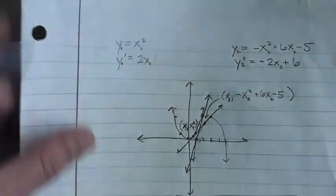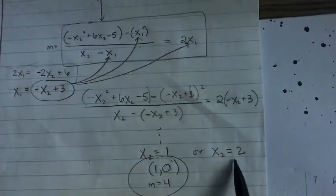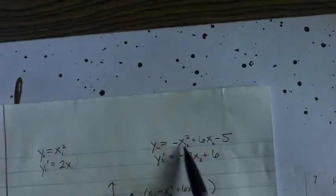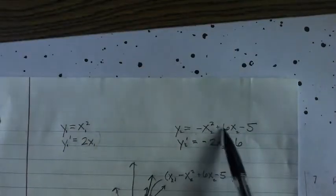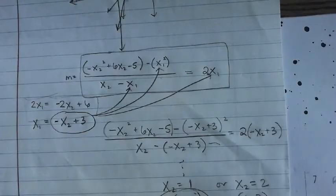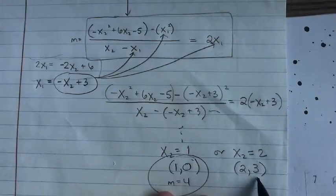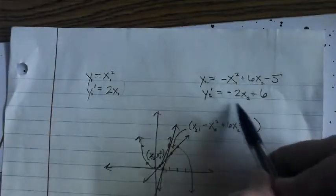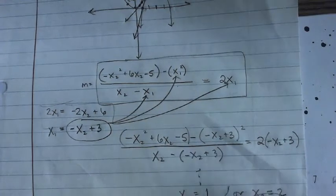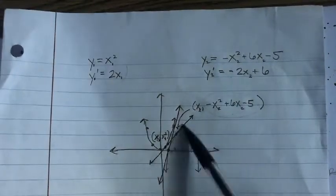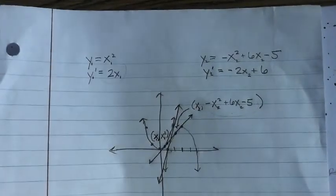And then your second x2 coordinate is 2, you'd plug it back in, you'd get negative 4 plus 12 is 8, 8 minus 5 is 3, so you'd get the point 2, 3. And the slope at 2 would be negative 4 plus 6, which is 2. And that would give you a second linear equation, which would be that second and initial one, actually, that we sketched in there.